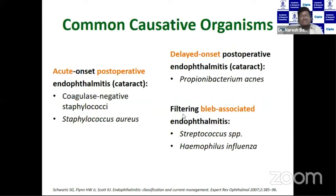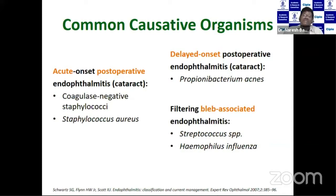When it comes to causative organisms in acute post-op endophthalmitis after cataract surgery, coagulase-negative Staphylococcus is commonly involved, and we have Streptococcus as well. In delayed cases, we should always think of Propionibacterium acnes. In bleb-related endophthalmitis, the common organisms are Streptococcus species and Haemophilus influenzae.